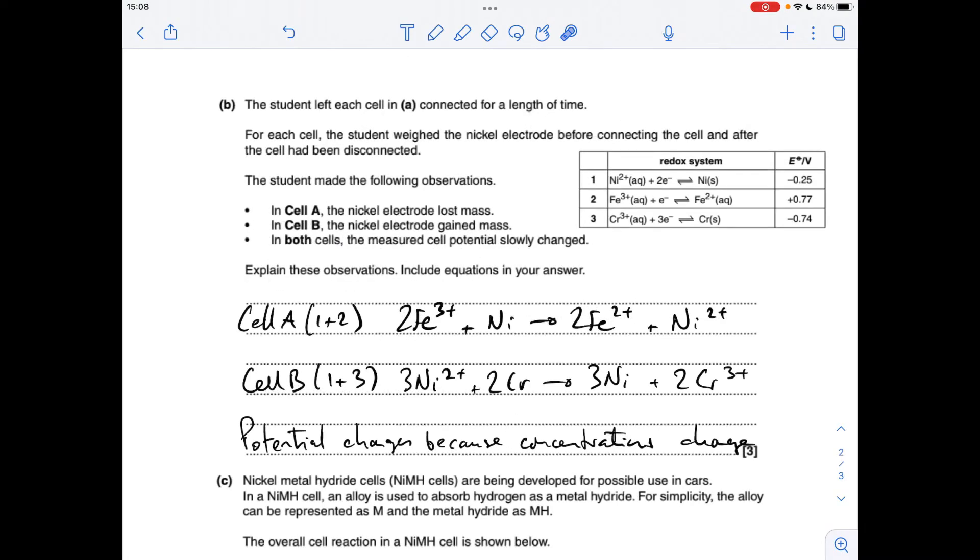Part B: we've got to back up with equations these statements here. So in cell A, the nickel electrode lost mass. Cell A is based on processes one and two. If we look at the standard electrode potentials, that's more positive than that, so this runs in the forwards direction, which means this runs in the reverse direction. You can see nickel's become nickel 2+, so it's going to lose mass.